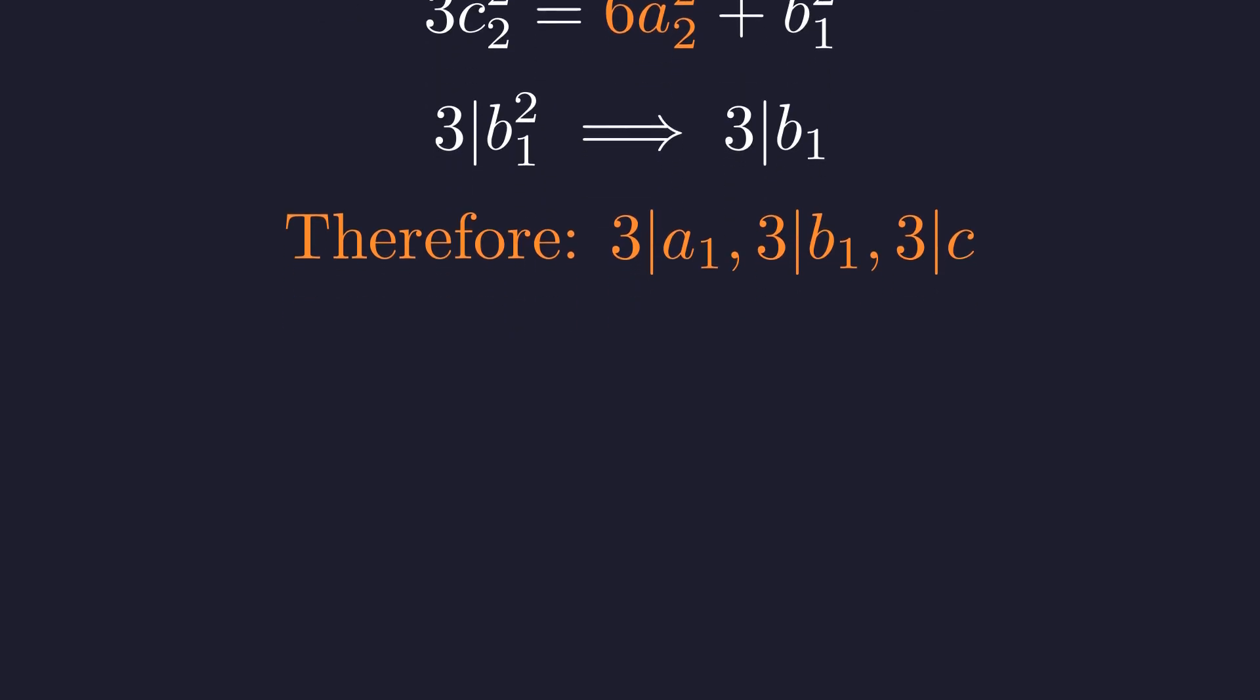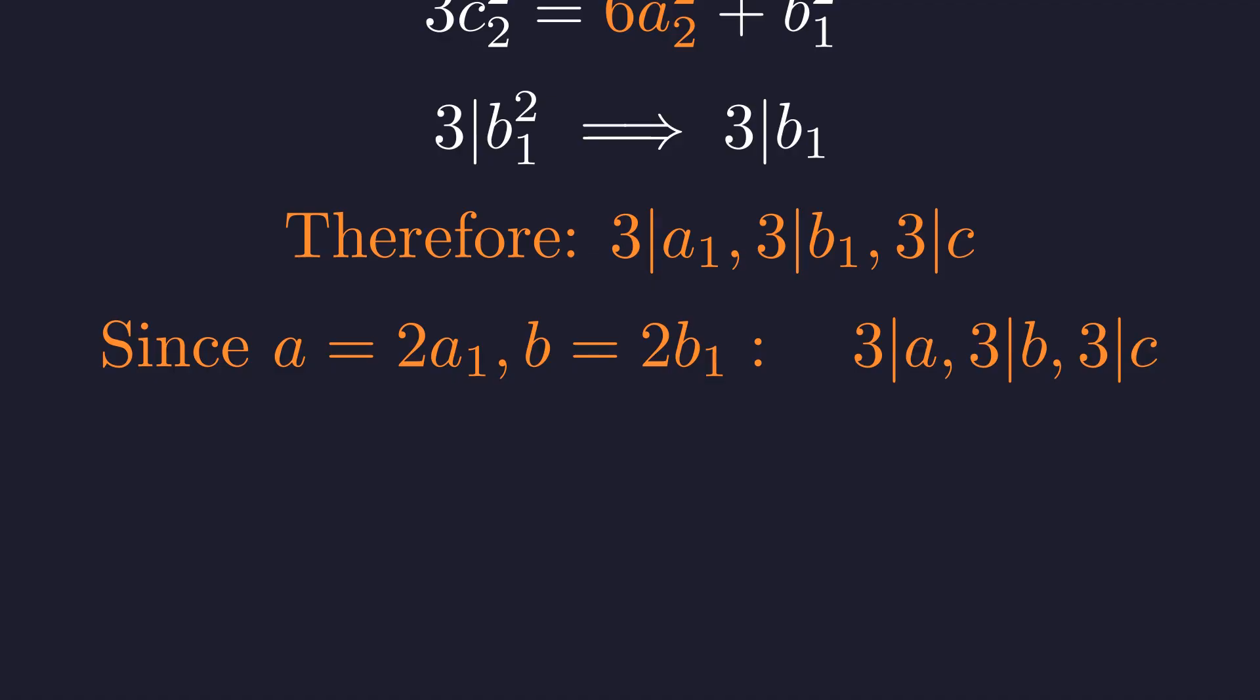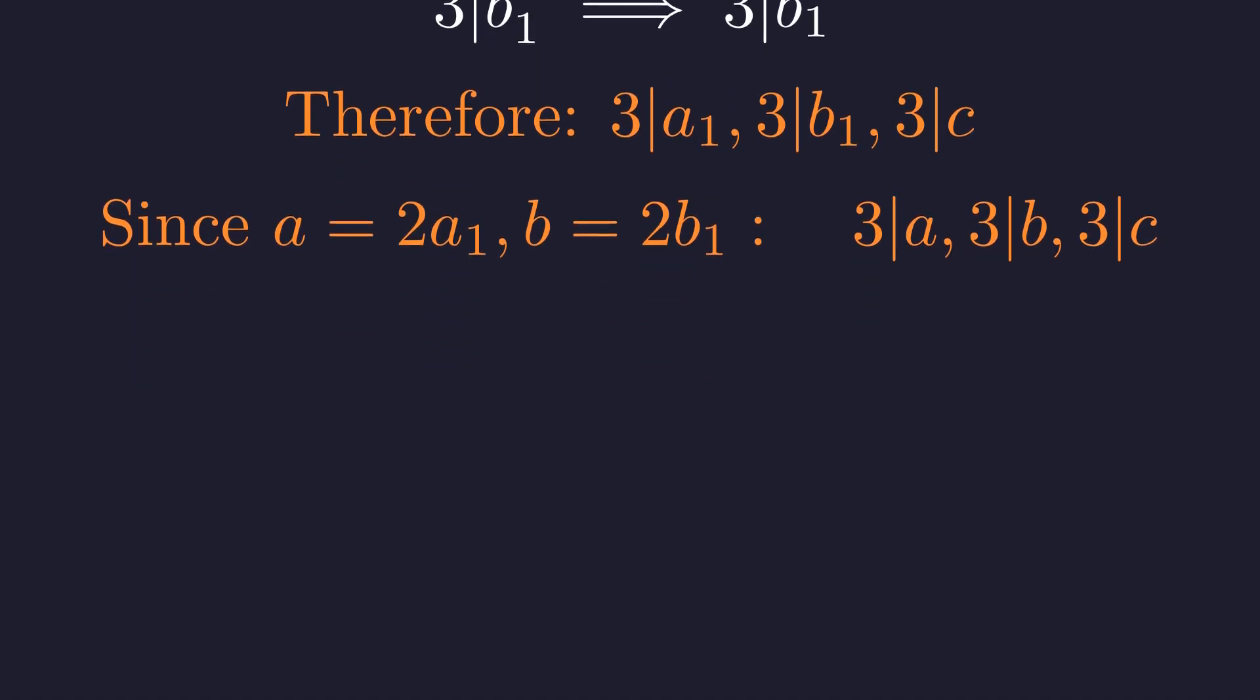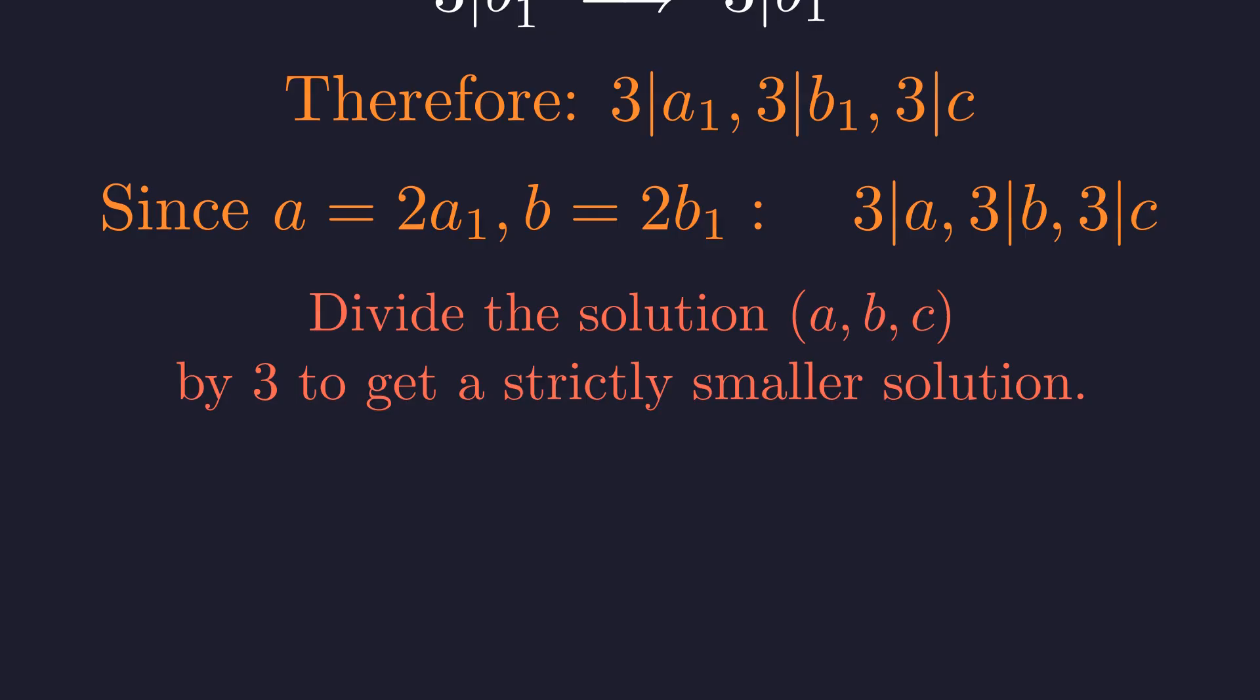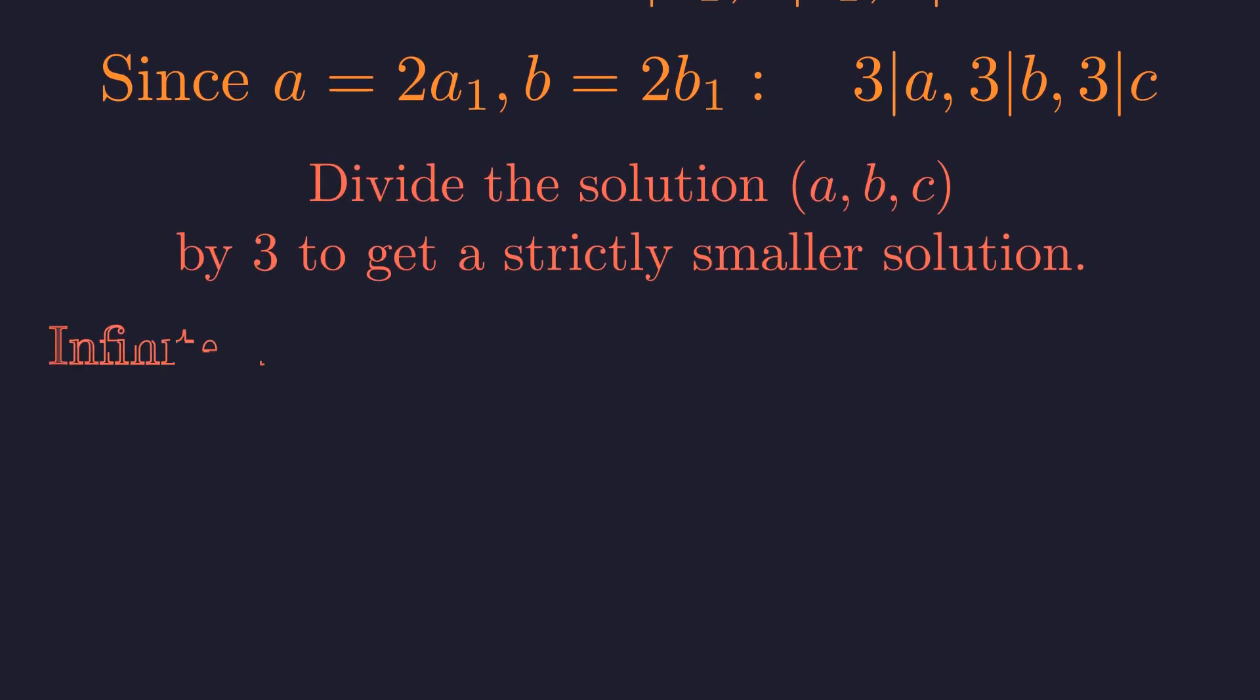We've shown that three divides a₁, b₁, and c. Since a equals two times a₁ and b equals two times b₁, we conclude that three divides all of a, b, and c. Now we can divide our entire solution by three to get a strictly smaller positive integer solution of the same form. Repeating this process would give us an infinite sequence of decreasing positive integers, which is impossible by the well-ordering principle.